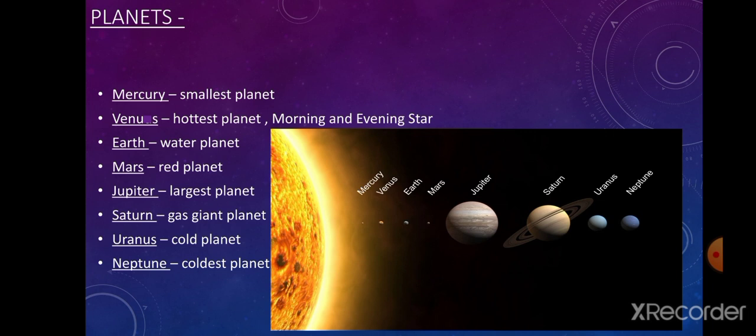Mars is known as the red planet and is named after the Roman god of war. It has the largest dust storms in the solar system. Jupiter is the largest planet in the solar system and rotates faster than any other planet. It has a red spot which is a rotating storm system. Saturn is the second largest planet, classified as a gas giant, and its rings are made of many pieces of rocks and ice.